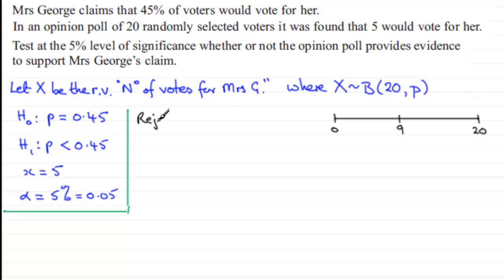We reject the null hypothesis if we find that the probability of our random variable X - the number of votes for Mrs. G - turns out to be less than or equal to 5, given that we're assuming the null hypothesis is true (p = 0.45), and if this probability turns out to be less than 0.05.